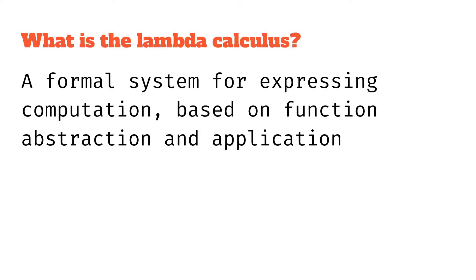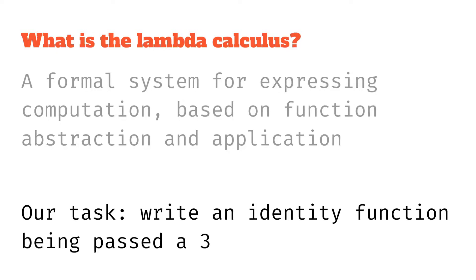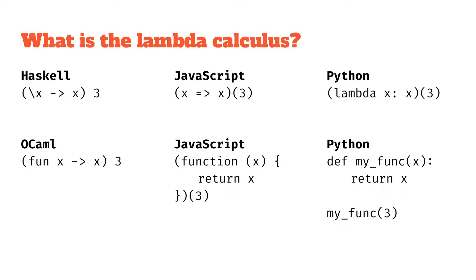Let's have a look at an example. We're going to look at writing an identity function — a function that just takes in an argument and spits it out again — being passed a three. In other languages it might look like this: on the left we've got functional languages like Haskell and OCaml, in the middle JavaScript, and on the right Python. Our lambda calculus will look more similar to the functional languages on the left and the shorter condensed versions at the top.